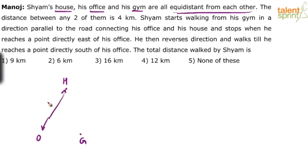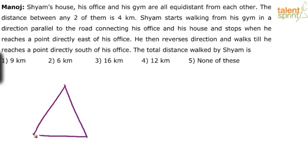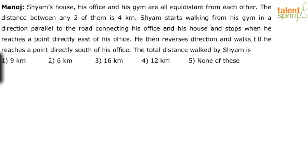So this is 4 kilometers. Let me actually make a proper equilateral triangle — not to scale, but one which looks right. So 4 kilometers is the distance between any two points. These three are the equidistant points. Now, it says Shyam starts walking from his gym in a direction parallel to the road connecting his office and his house, and stops when he reaches a point directly east of his office.